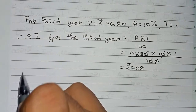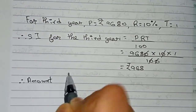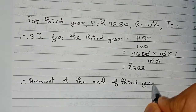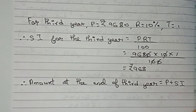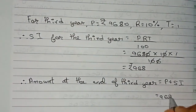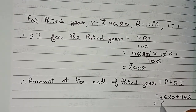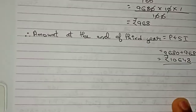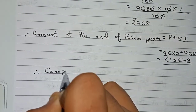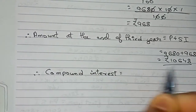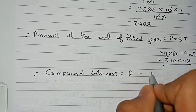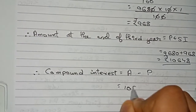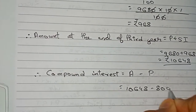This is the SI for the third year. The amount at the end of the third year, which is the total amount, equals principal plus SI: 9,680 plus 968, which becomes rupees 10,648. Now our last task is to find the compound interest. The compound interest formula is total amount minus the original principal, so 10,648 minus 8,000.